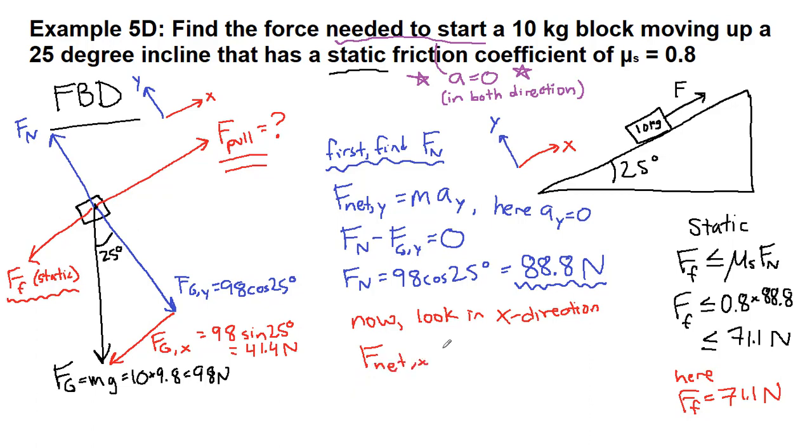In the x direction, we normally would have it be equal to max. But here the acceleration is still zero because, as we said before, it is not yet moving. We would have to pull harder than the number we're about to find. So this pull force is in the direction of our attempted motion, minus the friction force, minus the force of gravity in the x direction. And all of that equals zero.